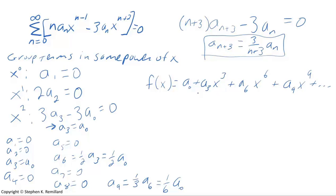Now this is not as simplified as it gets, so let's put in these coefficients. And so we have a_0 plus a_3 is a_0, plus a_6, which is (1/2)a_0, plus a_9, which is (1/6)a_0.